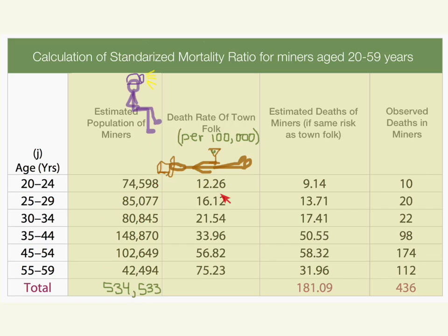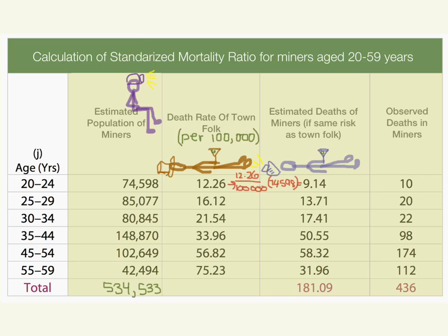What we're going to do is apply the death rates of the townies to the miners and ask: if we use the miners as the study population and apply the townies' death rates, how many dead miners would we expect to see if they followed the same death rates as the townies? So we would multiply 12.26 divided by 100,000 times 74,598, which gives us 9.14. So if the miners died at the same rate as the townies, you would expect 9.14 deaths in this age group. In the next age group you'd see 13.71, and so on down the age groups.